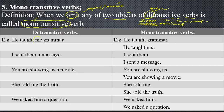For example: 'He taught me grammar.' Here 'me' is the indirect object and 'grammar' is the direct object. When you omit one of them — 'He taught grammar' or 'He taught me' — then 'taught' is changed into mono transitive. In the same way, 'I sent them a message': if you say 'I sent them' or 'I sent a message,' the meaning becomes incomplete, so the verb is now changed into mono transitive.